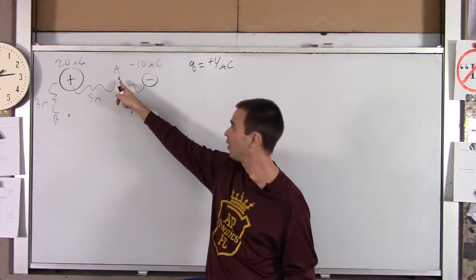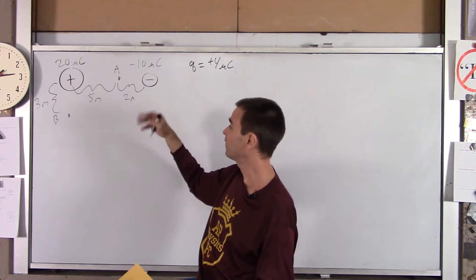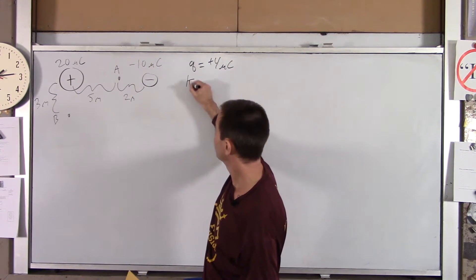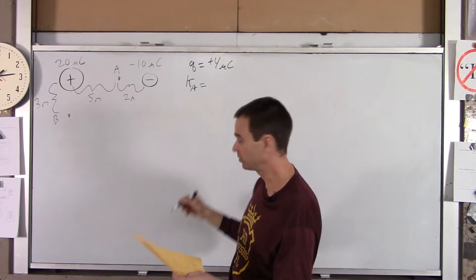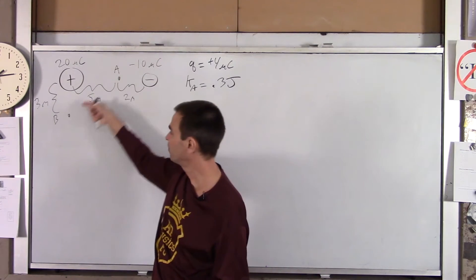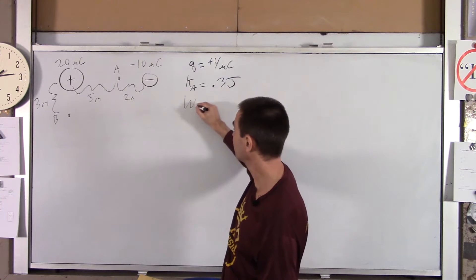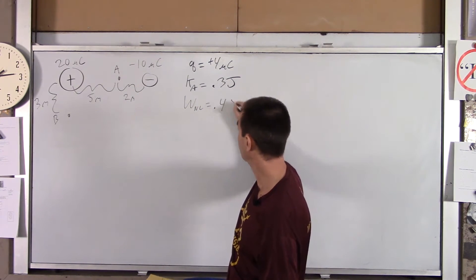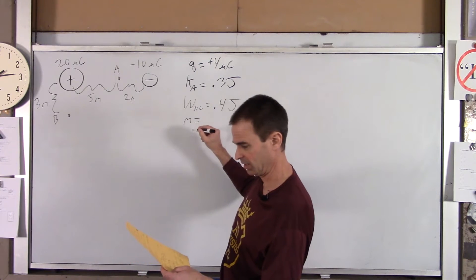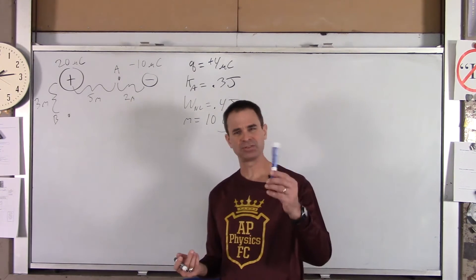At this moment, the charge is already moving — we're not just shoving it stationary from A to B. We're going to throw it from A toward B. At point A, it has kinetic energy of 0.3 joules, or 300 millijoules. As it moves from A to B, we're also going to do some non-conservative work on it — that is 0.4 joules. Its mass is 10 grams, so it's a relatively small object.